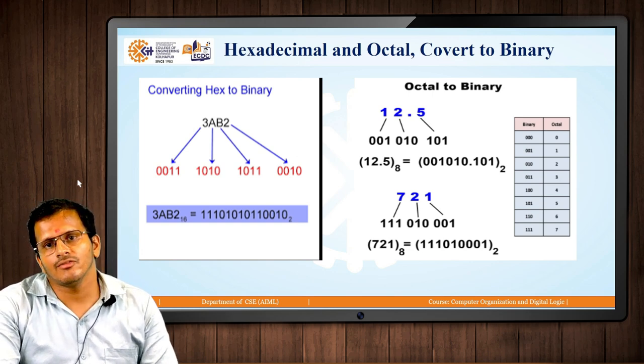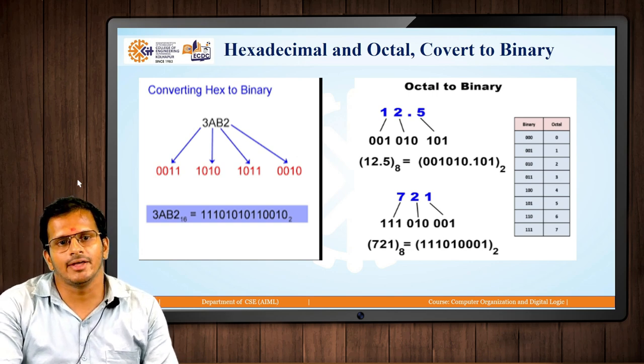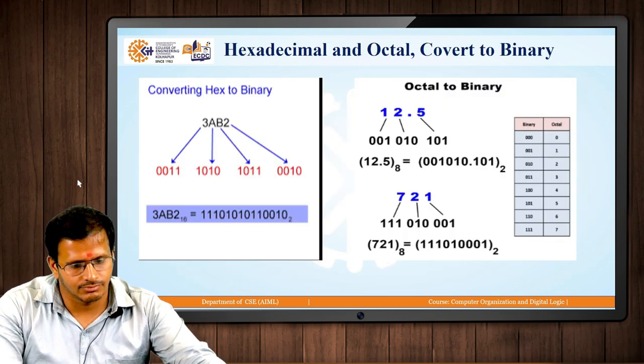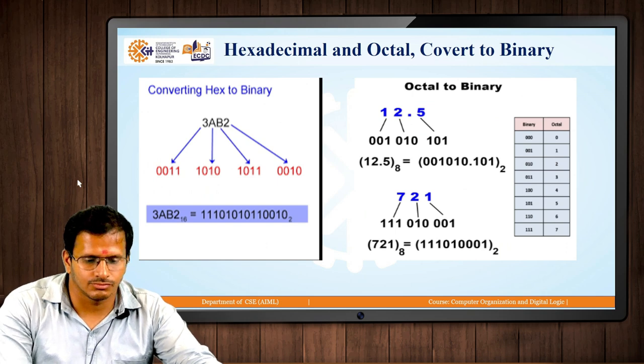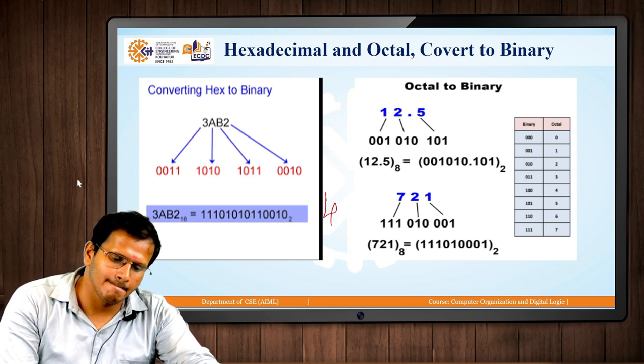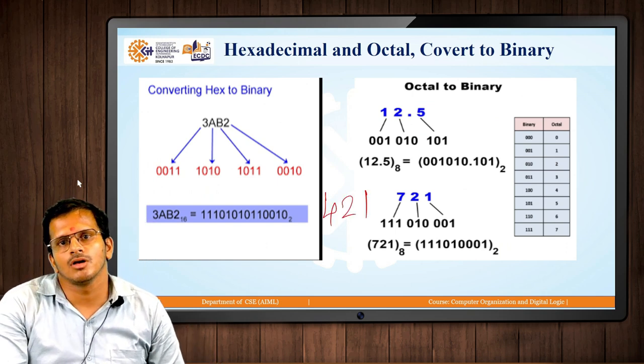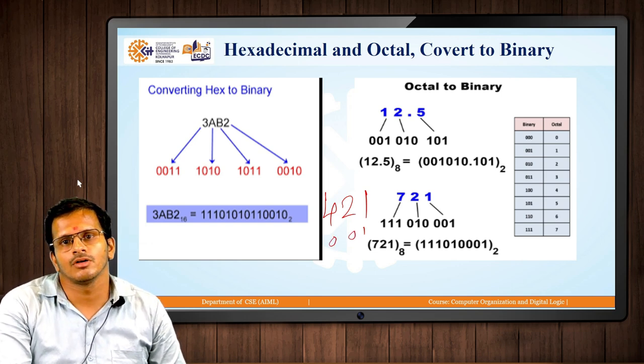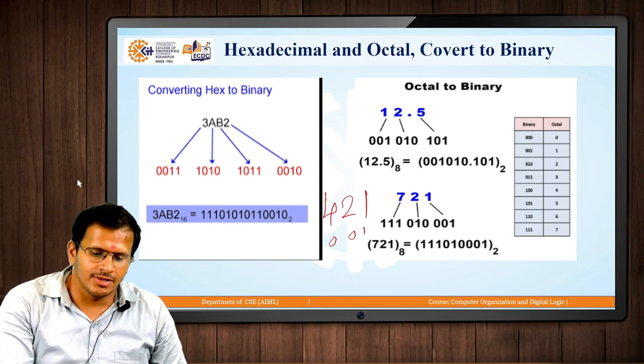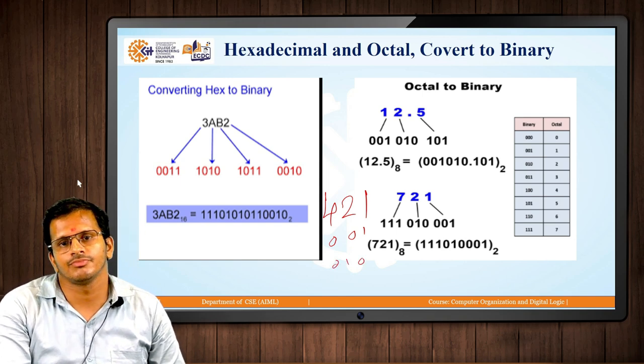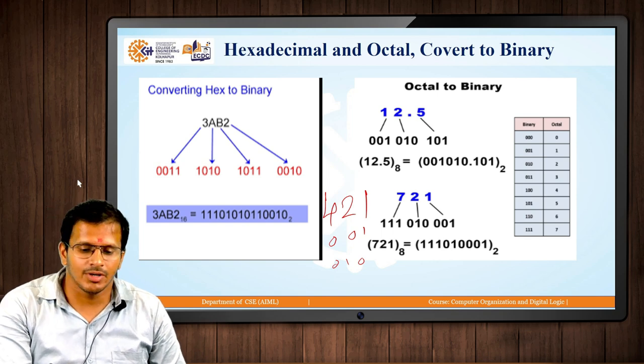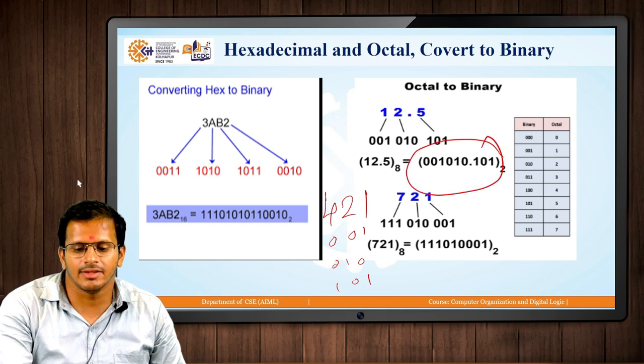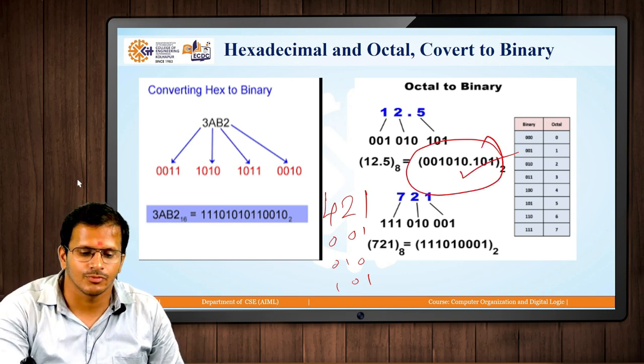For octal to binary conversion, we use the 421 format. 1 is represented as 001, 2 as 010, 5 as 101. These numbers are combined to get the binary number. Here is the representation.